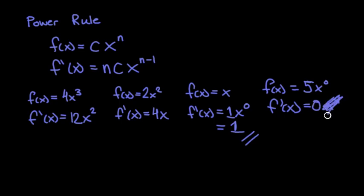So f'(x) in this case, you multiply 0 by 5 which equals 0 times x to the negative 1. But the x to the negative 1 doesn't even really matter because anything times 0 is 0. So the derivative of a constant is always going to be 0.